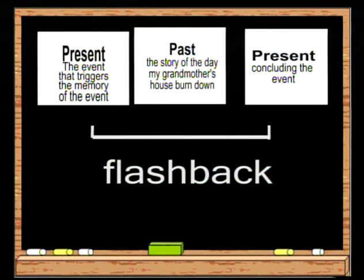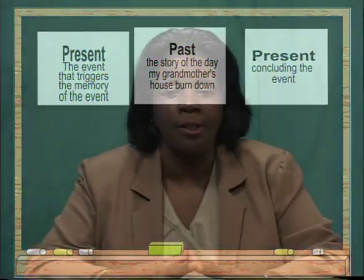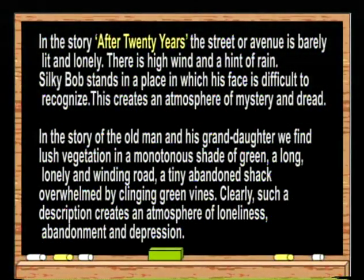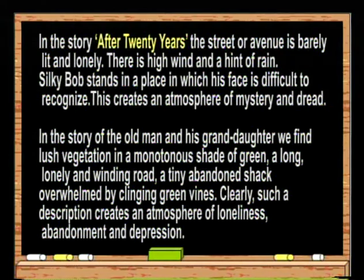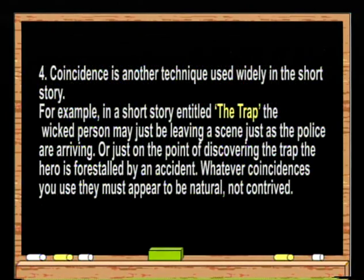Another technique popular among short story writers is the use of physical description to create a particular atmosphere. In 'After 20 Years', the street is barely lit and lonely, with high wind and a hint of rain; Silky Bob stands in a place where his face is difficult to recognize — this creates an atmosphere of mystery and dread. In the story of the old man and his granddaughter, we find lush vegetation in a monotonous shade of green, a long lonely winding road, and a tiny abandoned shack overwhelmed by clinging green vines, creating an atmosphere of loneliness, abandonment, and depression.